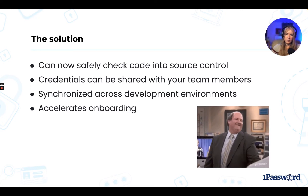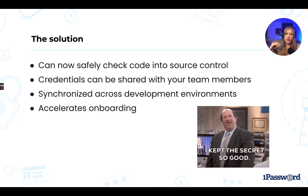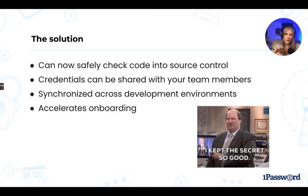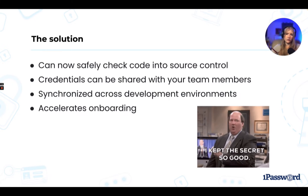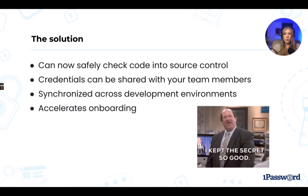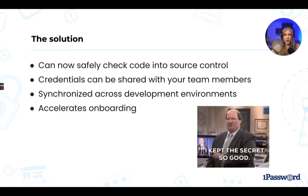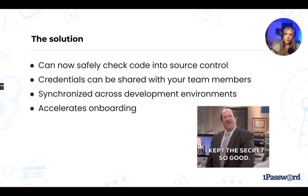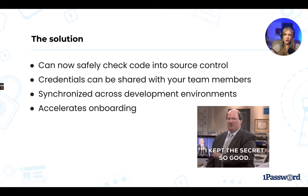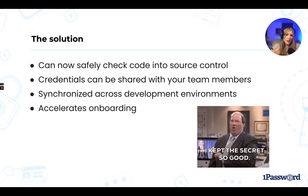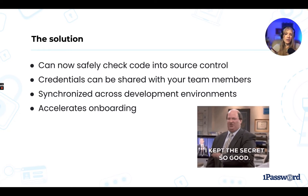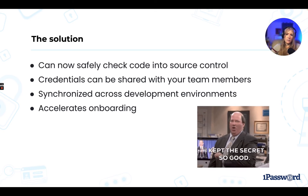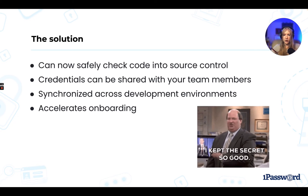Now that we've removed the secret values from our code, we can safely check in our environment file into source control so that everyone on the team can use the same credentials without risking sensitive data. That means no more worrying about whether or not you've added your environment files to .gitignore. In fact, when using secret references, you should push up your environment files, because with 1Password we can share access to credentials with other members of our team. Anyone with access can use the same secret references, and any changes made to credentials will be immediately available to everyone.